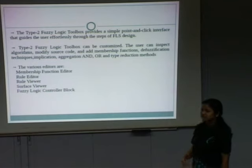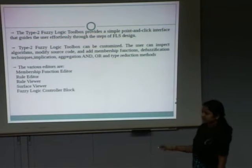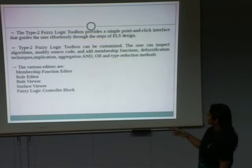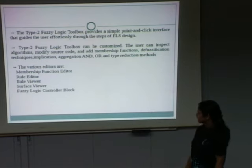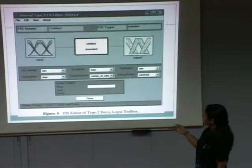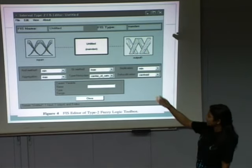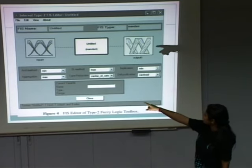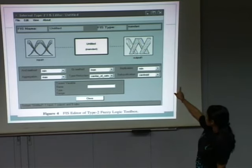The toolbox can be customized — the algorithm can be edited, membership functions can be added, and variables, defuzzification techniques, implication, and other methods are available. The toolbox consists of editors including a membership function editor, rule editor, rule viewer, surface viewer, and fuzzy logic controller block. This is a snapshot of the fuzzy logic toolbox. It consists of a menu with file, edit, and other options. The input is given, processed through fuzzy logic membership function blocks, and the output is obtained. Drop-down lists are available for options like minimum, product, maximum, and sum.